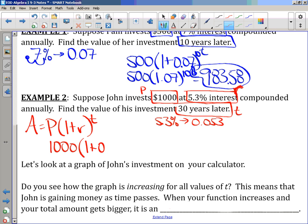So, 1 plus 0.053. In this case, it would be 53,000 to the 30th power. Or I could add 1 plus 0.053. That might be a little bit better to put into the calculator. And we get $4,708 and 16 cents.